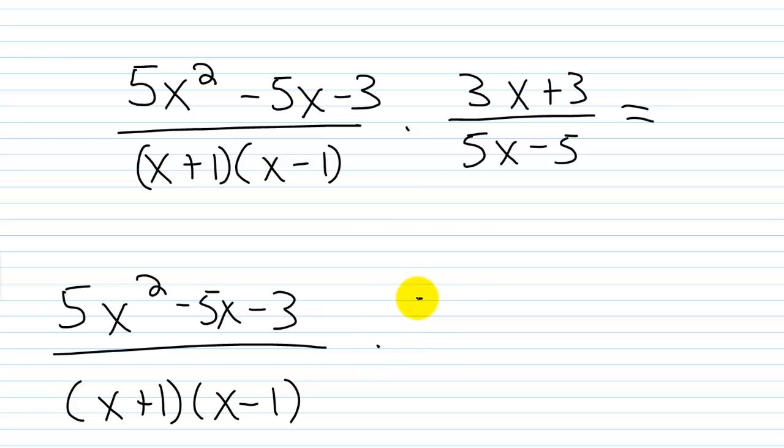I can pull a 3 out of the numerator, so this would be 3 times x plus 1. And I can pull a 5 out of the denominator, so this would be 5 times x minus 1. So I can cross cancel this x plus 1 with this x plus 1.